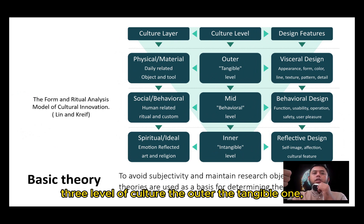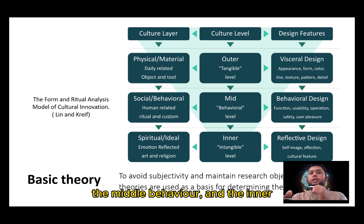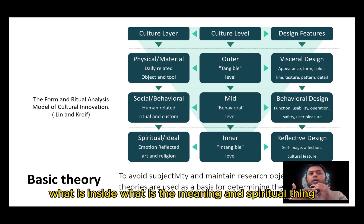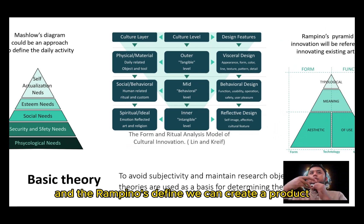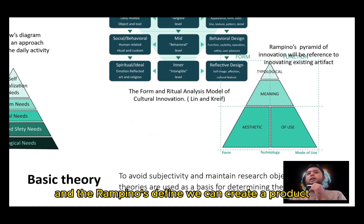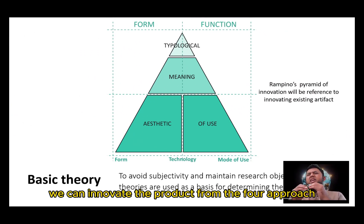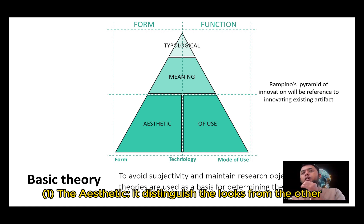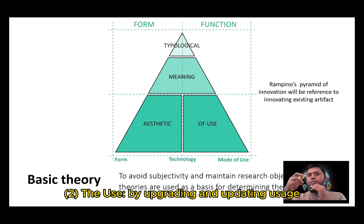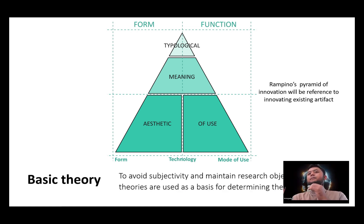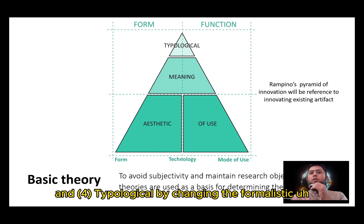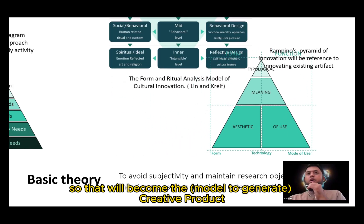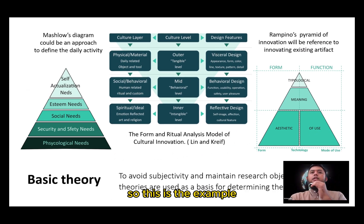The three levels of culture are: the outer tangible one, the middle behavioral level, and the inner level — what is inside, meaning the spiritual and symbolic dimension. Rampino defines that we can innovate a product from four approaches: the aesthetic, distinguishing the look from competitor products; the use, by upgrading and updating usage; the meaning, associating with symbol and typology; and by changing the formalistic archetype. So that will become the creative product.